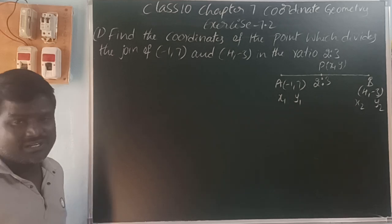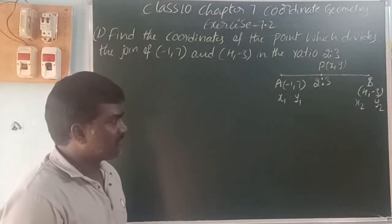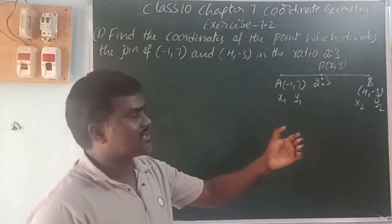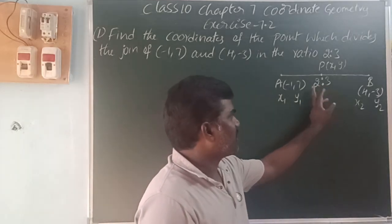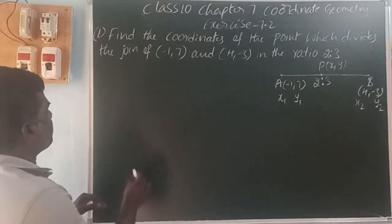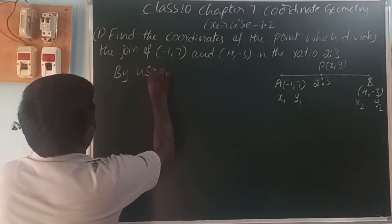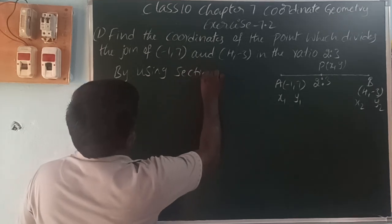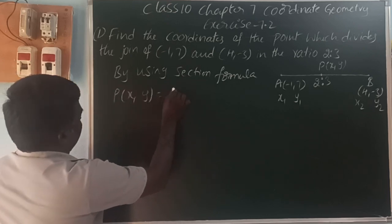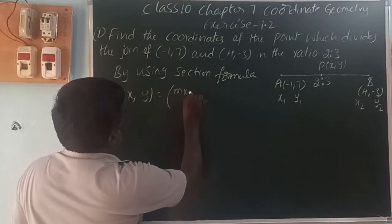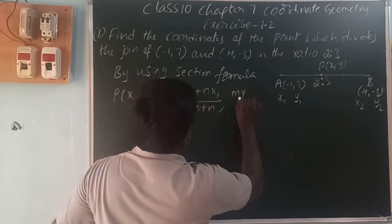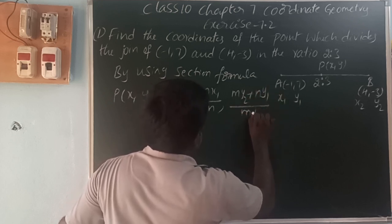The line segment joins points minus 1 comma 7 and B point 4 comma minus 3. This line segment is divided into two parts, with ratio m:n as 2:3, and the dividing point is x comma y. By using the section formula: